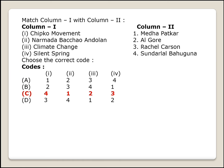Next question: match column 1 with column 2. Chipko Movement — Sundar Lal Bahuguna; Climate Change — Al Gore; Narmada Bachao Andolan — Medha Patkar; Silent Spring — Rachel Carson. Option C is the right answer.